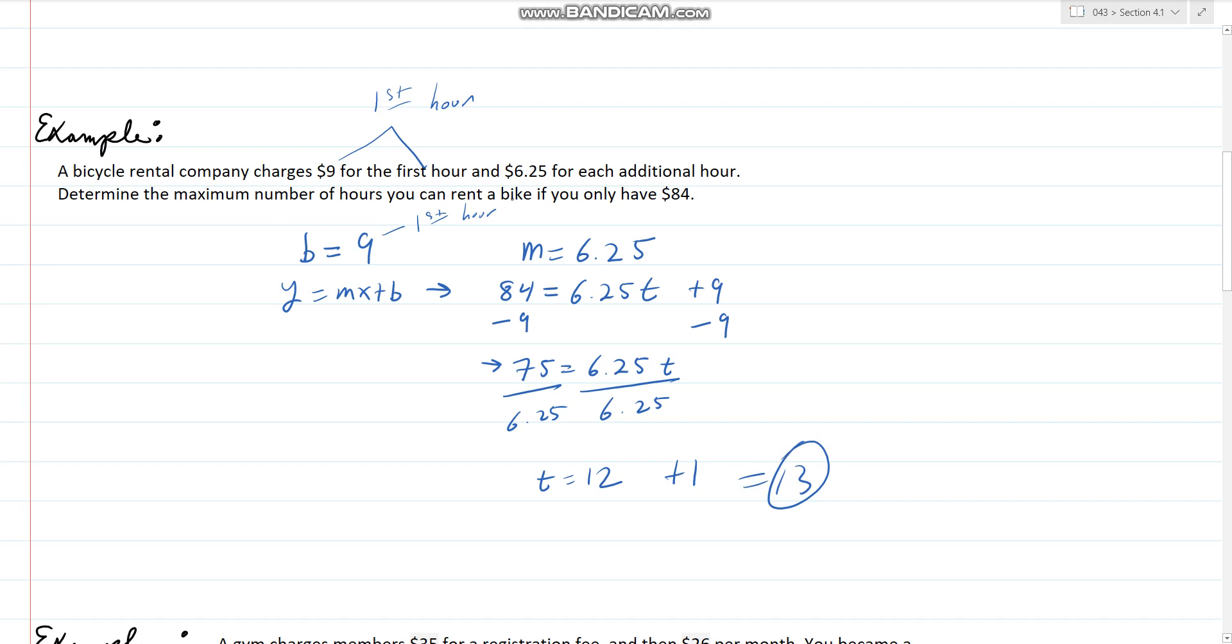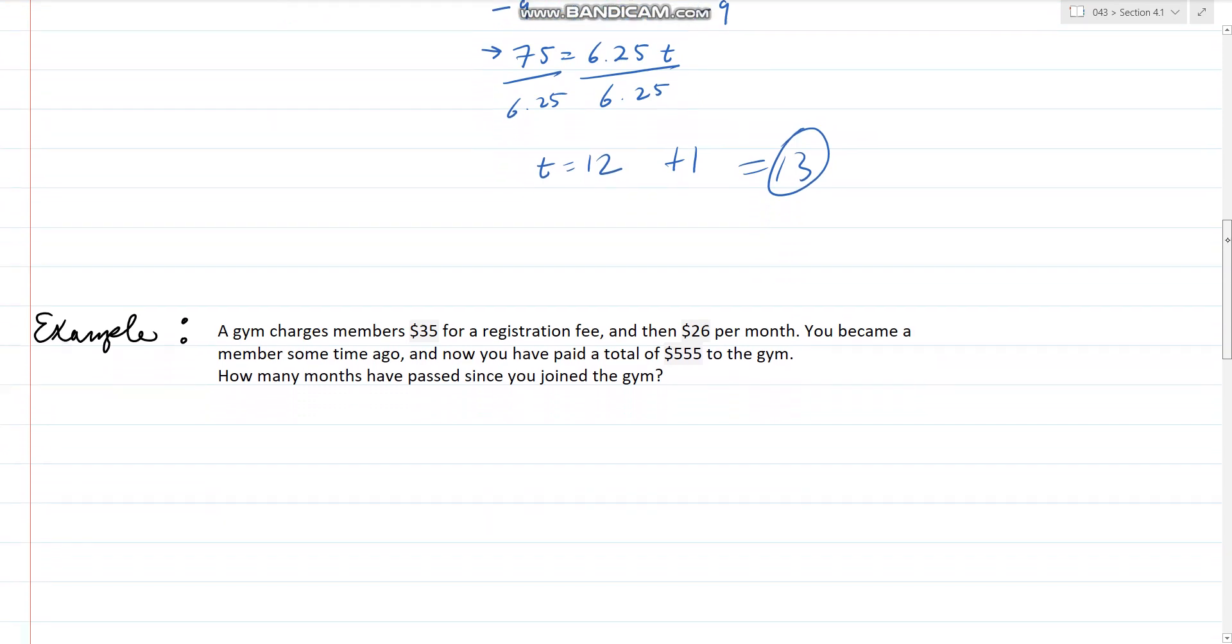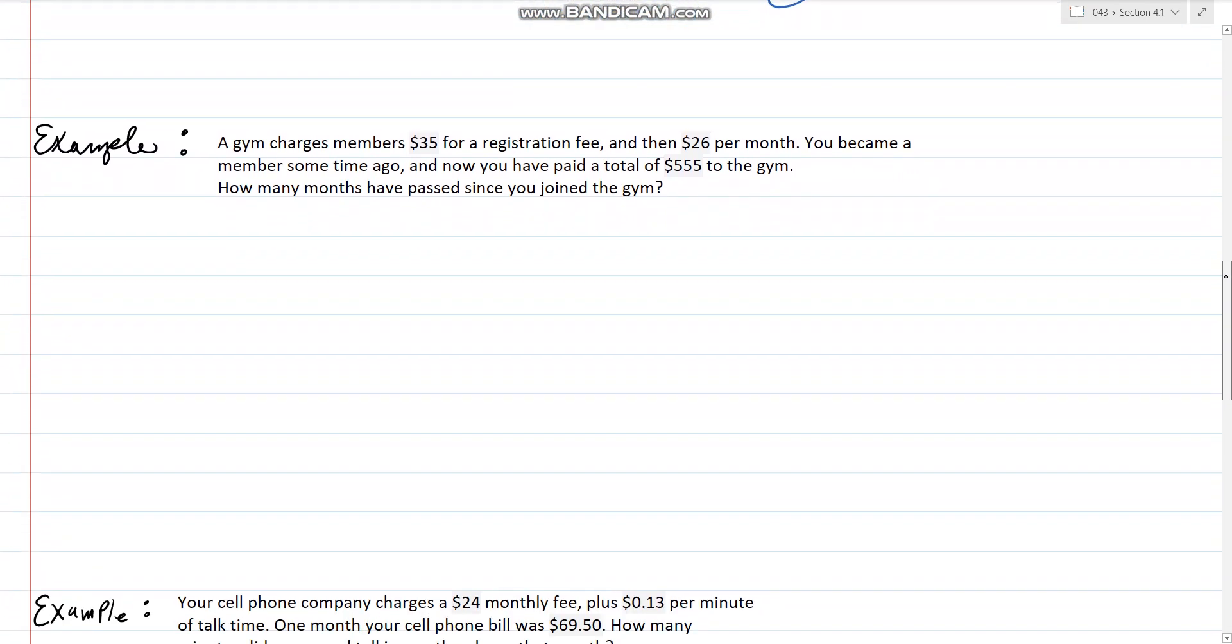Another way to do it is you can just go 84 minus 9 divided by 6.25 to find your answer. That's another method you can use. But if we use this line scenario, that's how you would do it. I think we have time for another example.